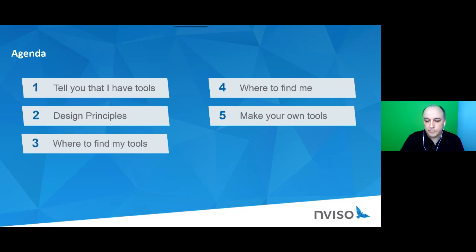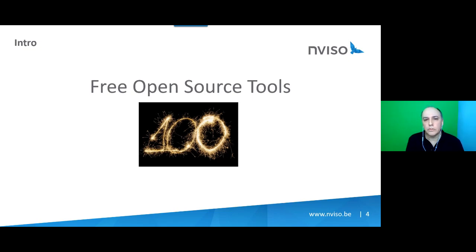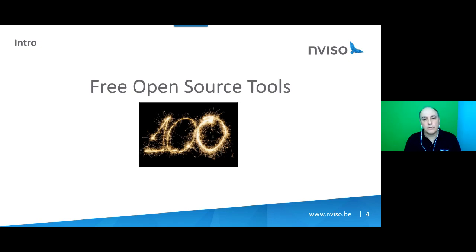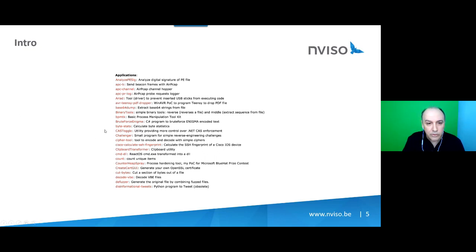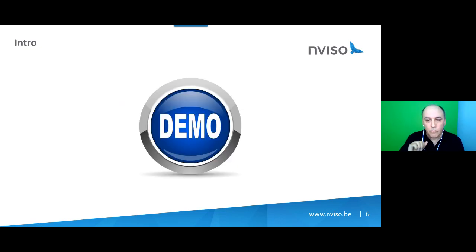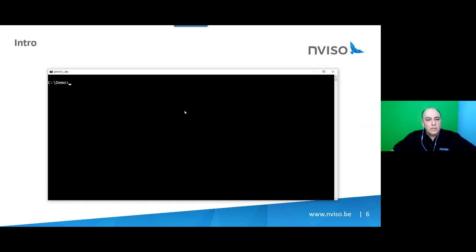I have more than 100 free, open source tools, all documented on my blog — because otherwise I wouldn't remember them all. One method to organize them is an alphabetical list on my blog. For example, one of the tools we'll use today is base64dump, a tool to extract base64 strings from files. Without further ado, let's get started with the demo.